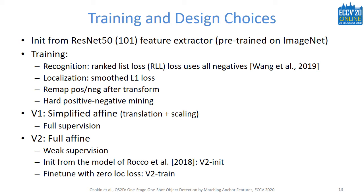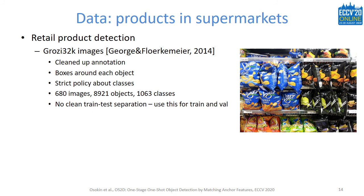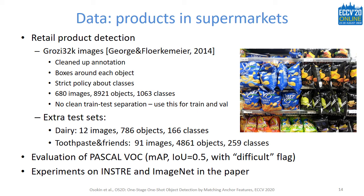Fine-tuning V2 further appeared to be challenging, probably due to contradicting signals from the localization loss and the alignment of the transformation model. The only way to fine-tune was to turn off the localization loss completely. Our main domain of interest was detecting products on supermarket shelves. For training, we used images from the Grozi-32k dataset, creating our own annotations — 680 images with around 9,000 objects of 1,000 classes. For testing, we collected two sets with different classes: dairy and toothpaste-related products. We also have results on the INSTRE dataset with logos, buildings, and 3D objects, and report results on an ImageNet-based setting.